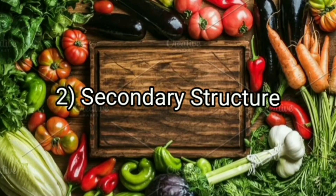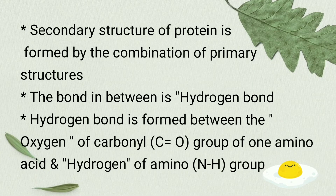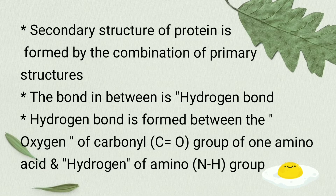Secondary structure of protein: The secondary structure of protein is formed by the combination of many primary structures, and the bond involved is the hydrogen bond. So many primary structures are joined together by hydrogen bonds to form the secondary structure. We want to know where this hydrogen bond is formed.